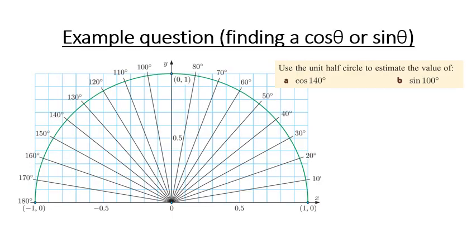Okay, so let's look at some example questions here. It says use the unit half circle to estimate the value of cosine 140. So again we find 140 and we go straight down to our cosine value and it looks like...